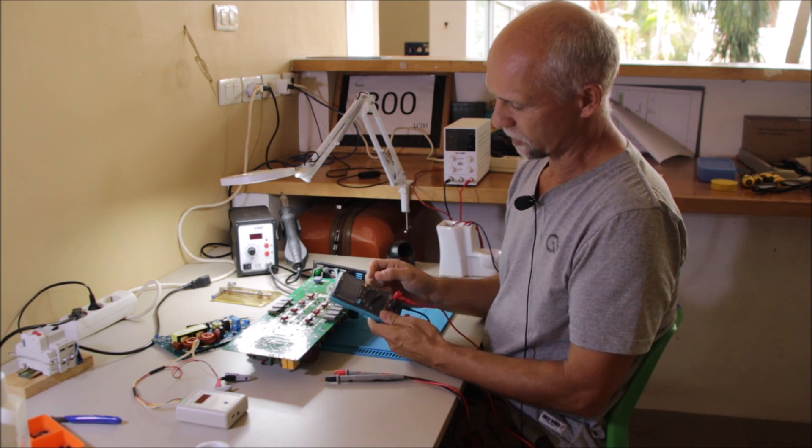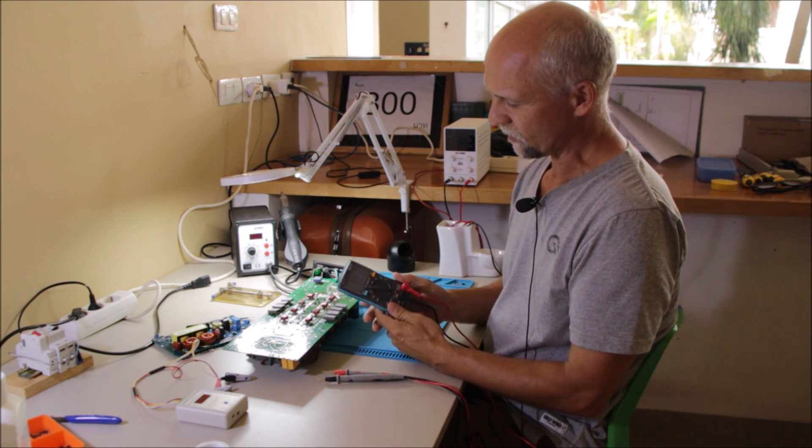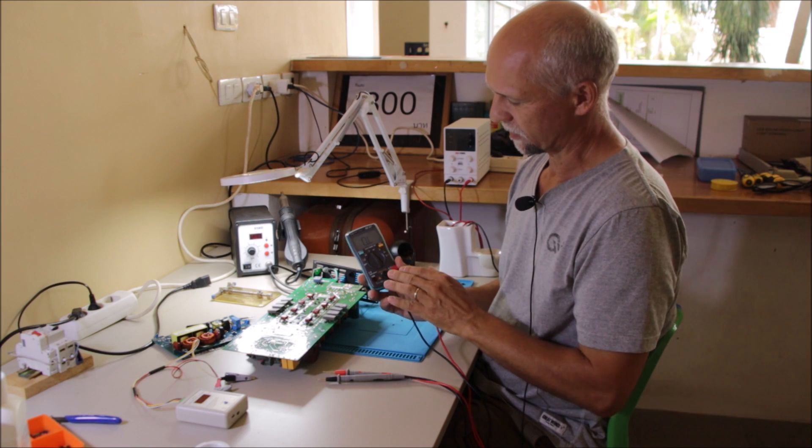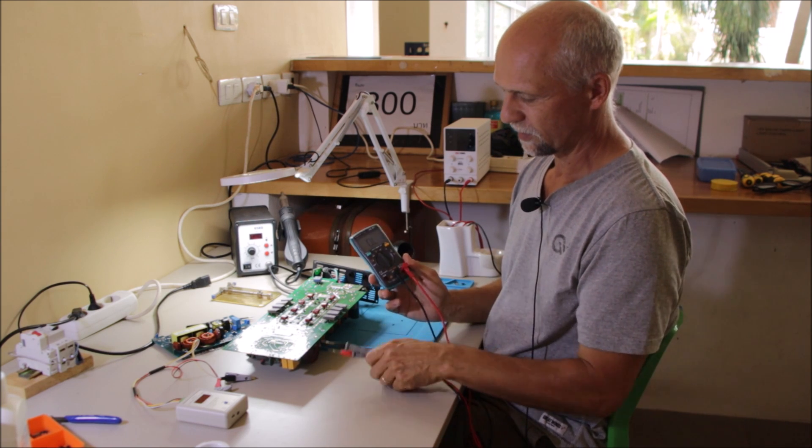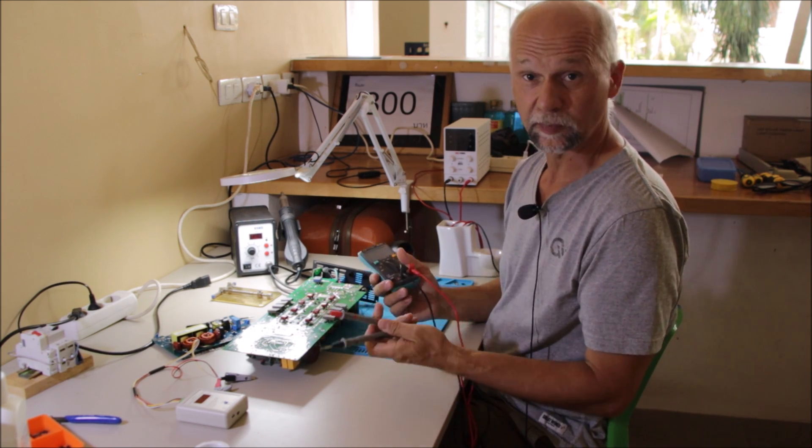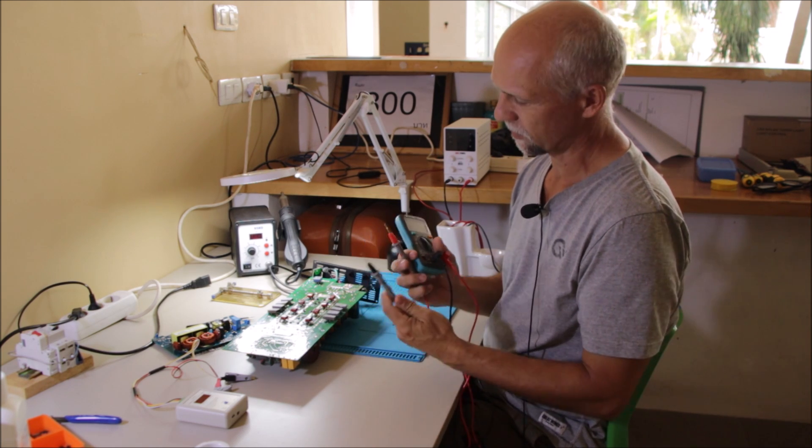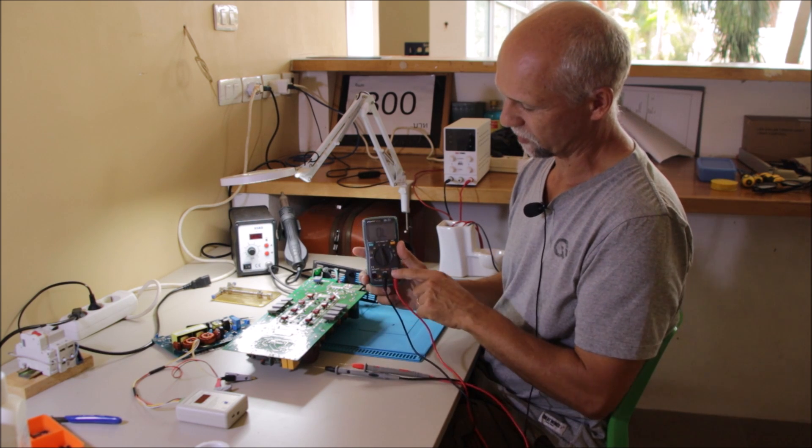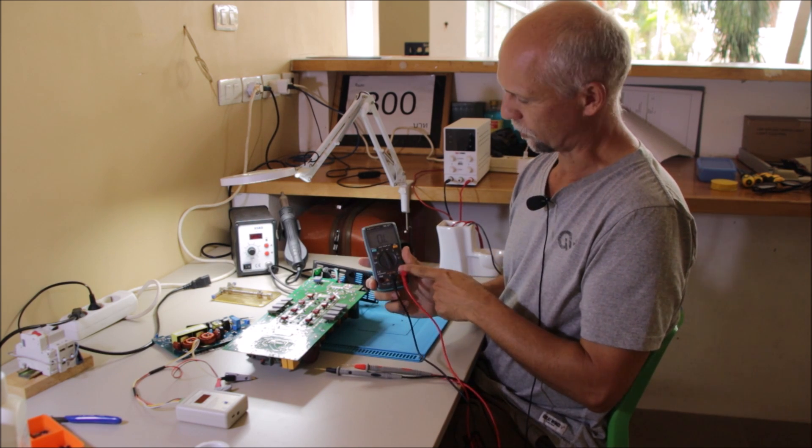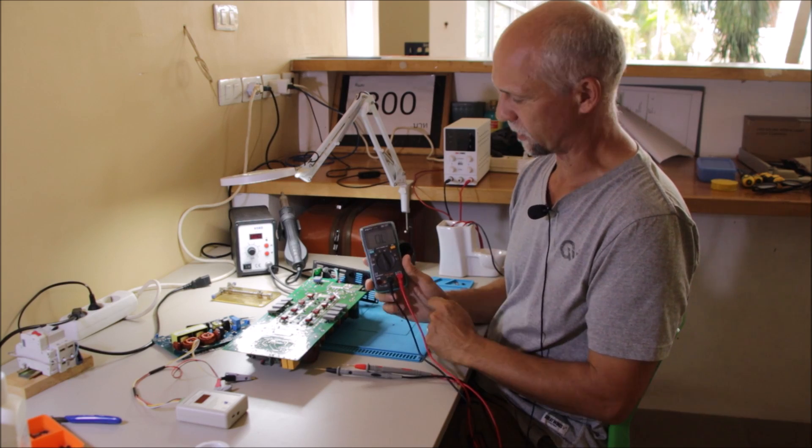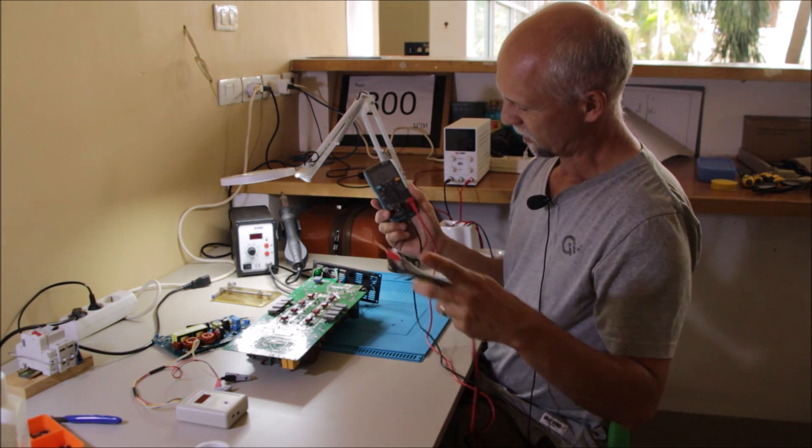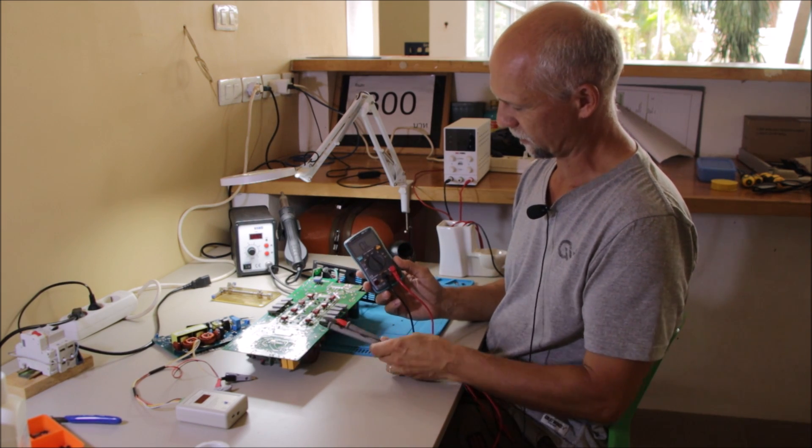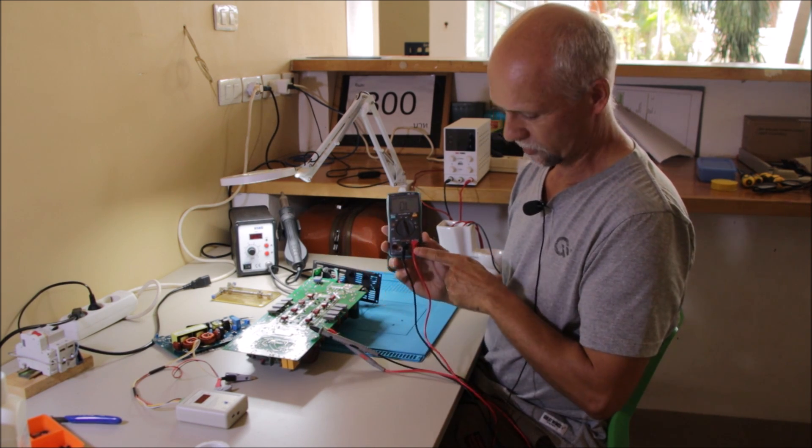The biggest problem is the measurement method. When you take a measurement with the multimeter, you have to understand that the measurement, when you measure resistance, is not taken at the probes at your part. The measurement is taken here at the input of your multimeter.